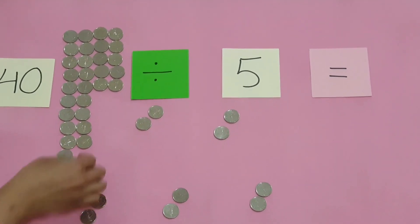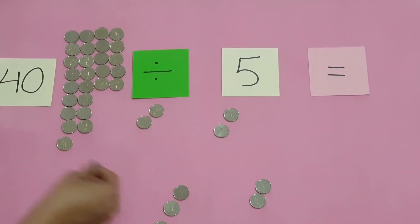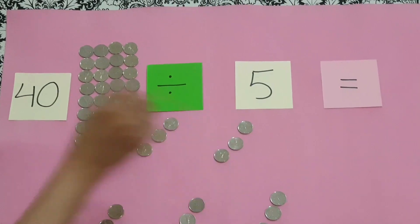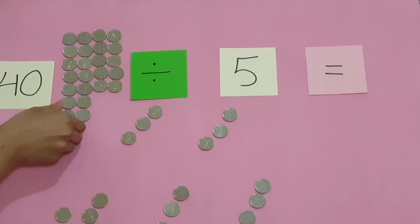You can have five friends or five people from your home and give equal number of coins to all of them and find out how many each of them will get after you divide.